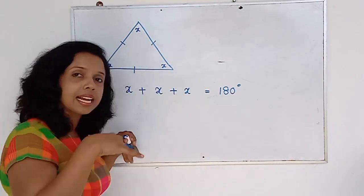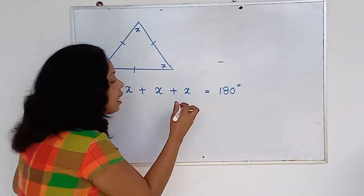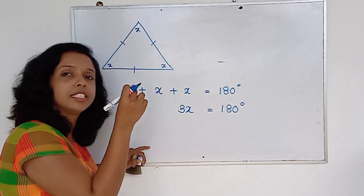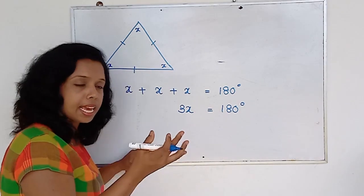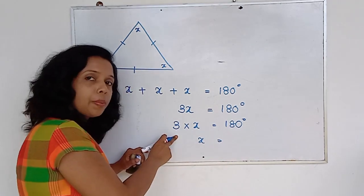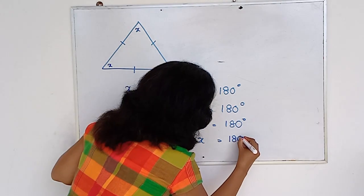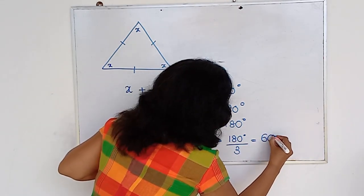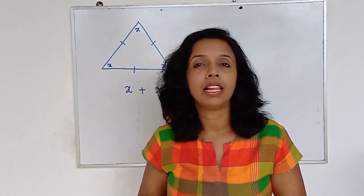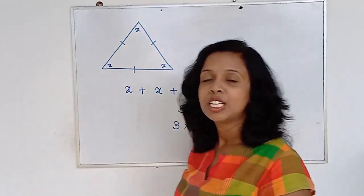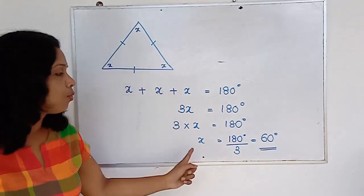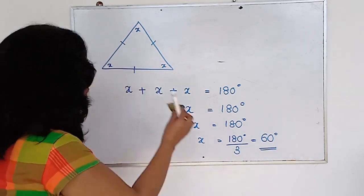Since all angles are equal, let each be x. So x plus x plus x equals 180 — because angles in a triangle add up to 180. That gives 3x equals 180 degrees. From your algebra: x equals 180 divided by 3, which is 60 degrees. So in an equilateral triangle, all three sides are equal, all internal angles are equal, and each angle is 60 degrees.